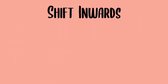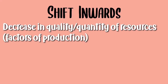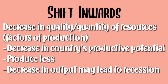Now let's look at why the production possibility curve would shift inwards. This happens because there is a decrease in the quality and quantity of resources, or your factors of production. When the curve shifts inwards, there is a decrease in the country's productive potential, meaning they produce less and a decrease in output may lead to recession as their GDP falls. For example, natural disasters would cause the curve to shift inwards.